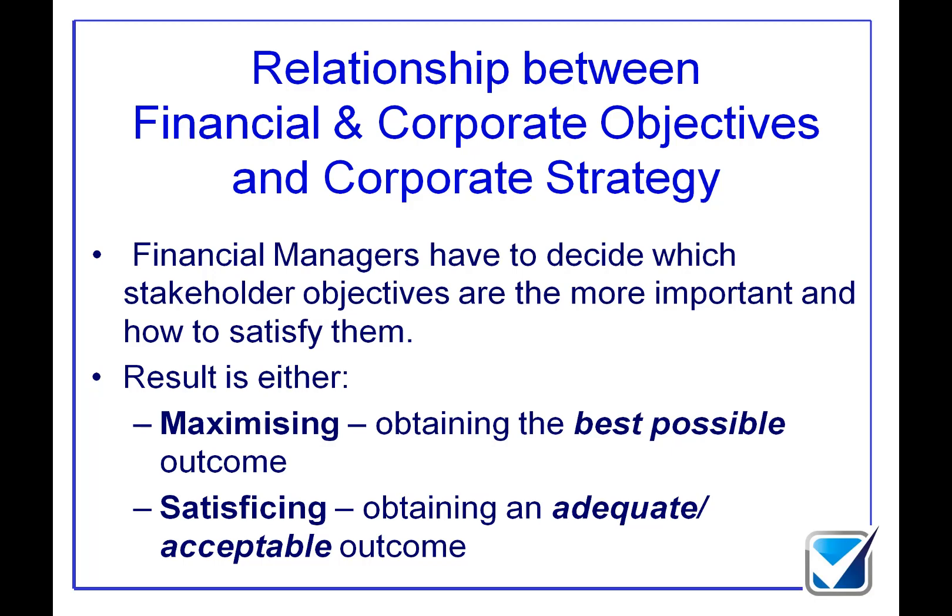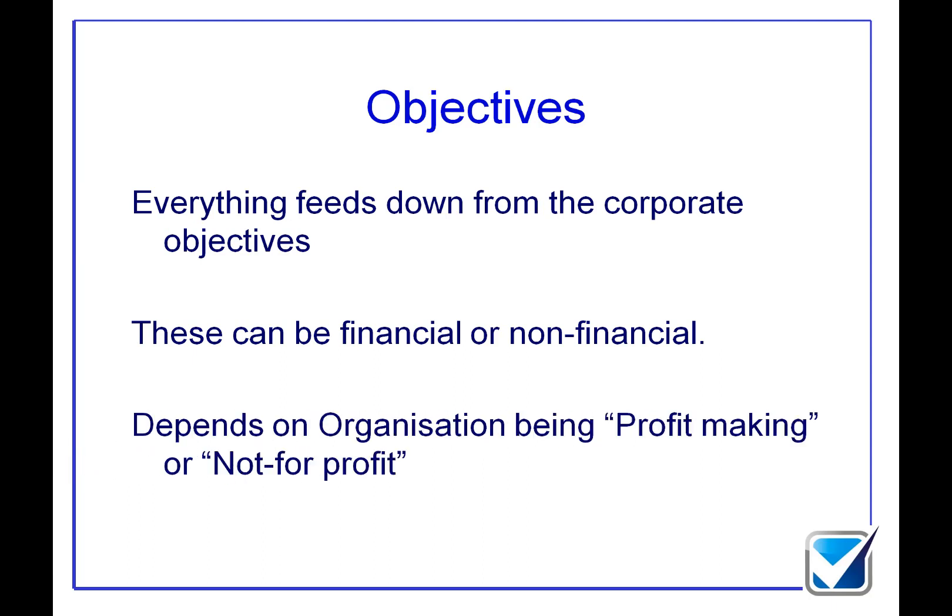That word 'satisficing' is really important — it's not a typo; it's a key area of the syllabus. It means giving a key stakeholder group an amount of reward or return which keeps them reasonably happy — not super happy, but reasonably happy. All objectives across the organisation must cascade down from key long-term corporate objectives: strategic objectives fire into tactical, which fire into operational — from super long-term to medium-term to short-term.